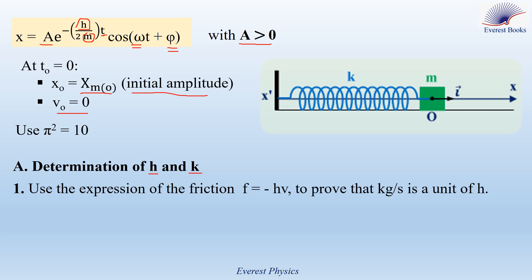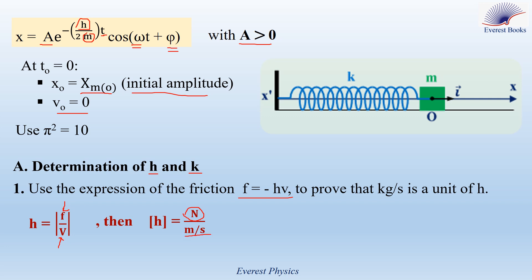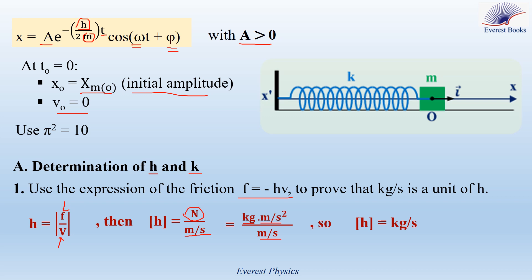Use the expression of the friction f equals minus hv in order to prove that kg per second is a unit of h. If f equals minus hv, then h equals the absolute value of f over v. So the unit of h equals the unit of f over the unit of v. The unit of f is the newton, and the unit of v is meters per second. Since newton equals kilogram times meter per second squared, dividing by meter per second, the meters cancel and one power of seconds cancels, leaving the unit of h equal to kilogram per second.